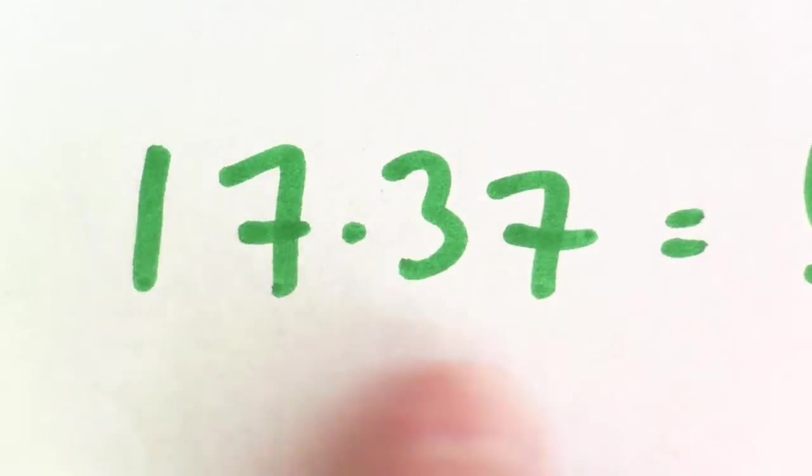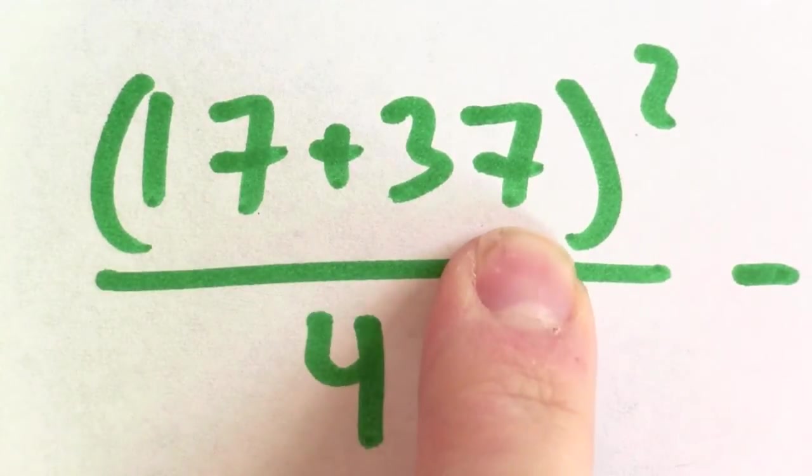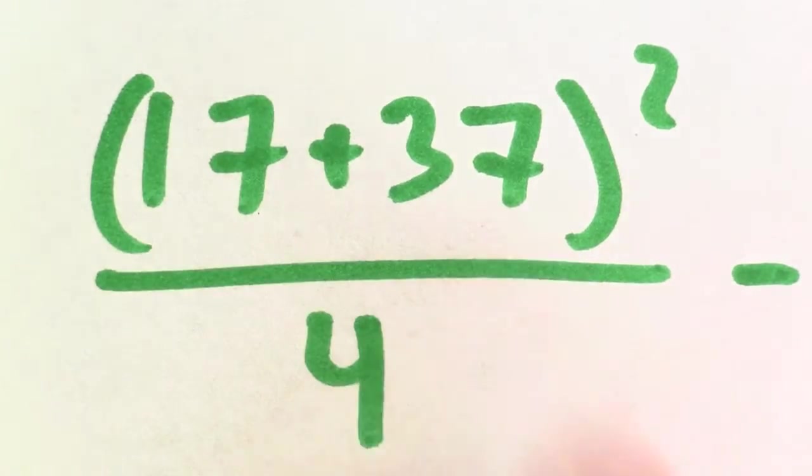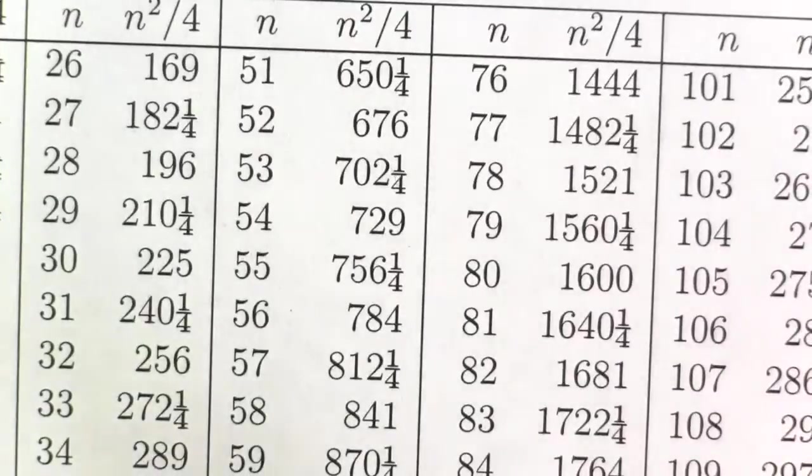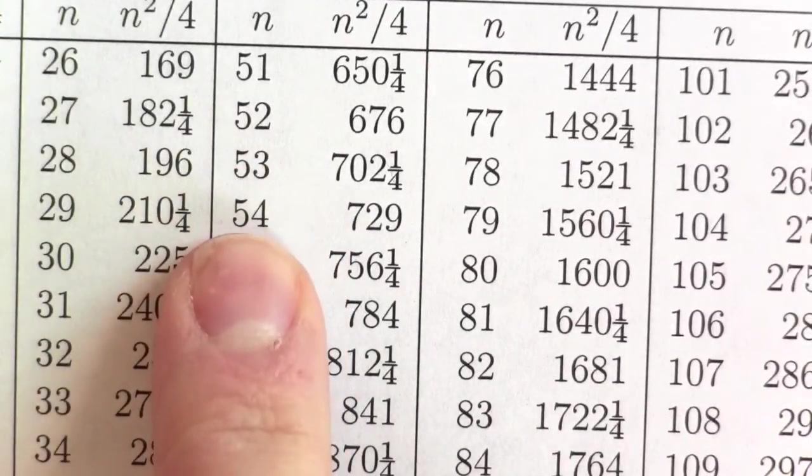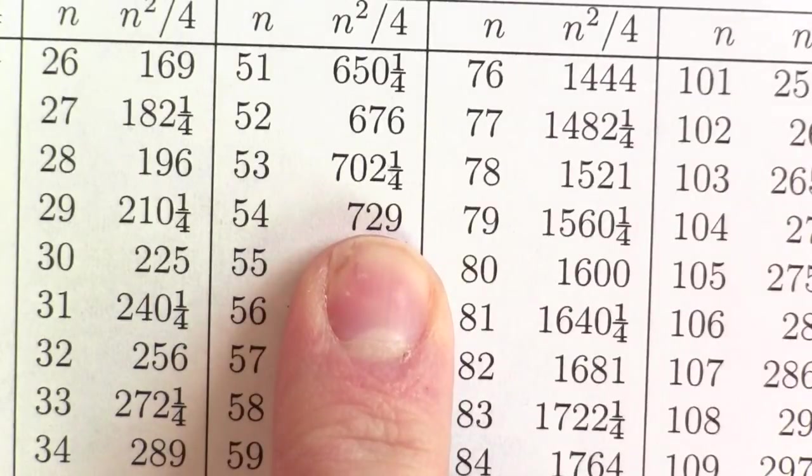Let's try doing this on a much bigger number. Let's try to multiply 17 by 37 using quarter squares. So, the first thing to do is to figure out the quarter square of 17 plus 37. 17 plus 37 is 54. I've got a much bigger table of quarter squares here. Here's 54 in my table. 54 squared over 4, according to my table, is 729.